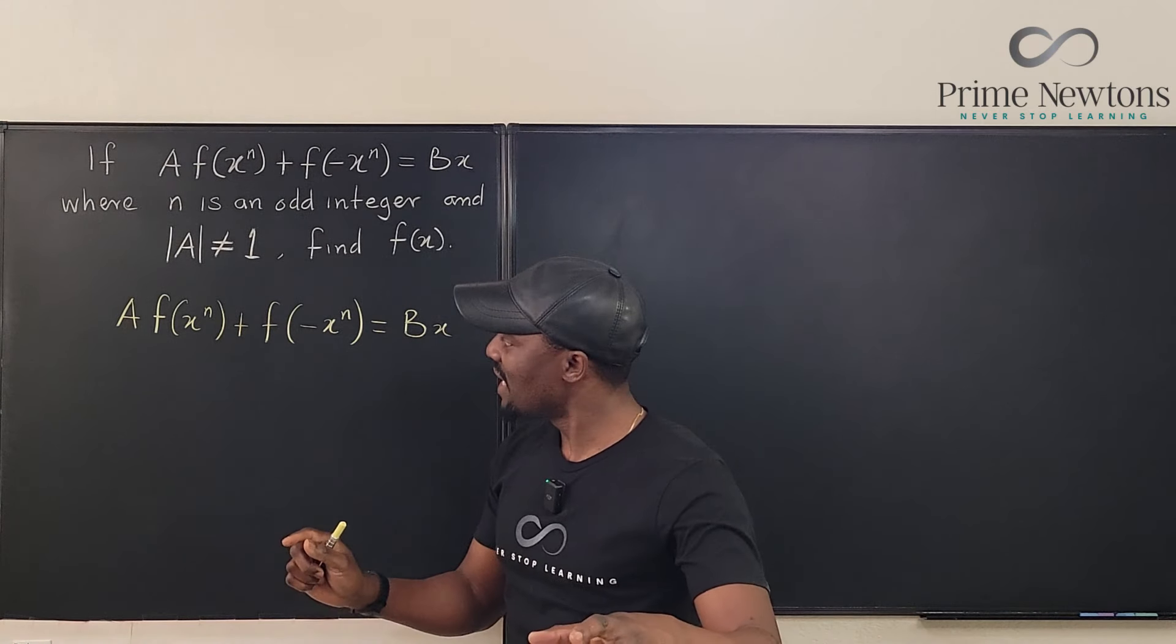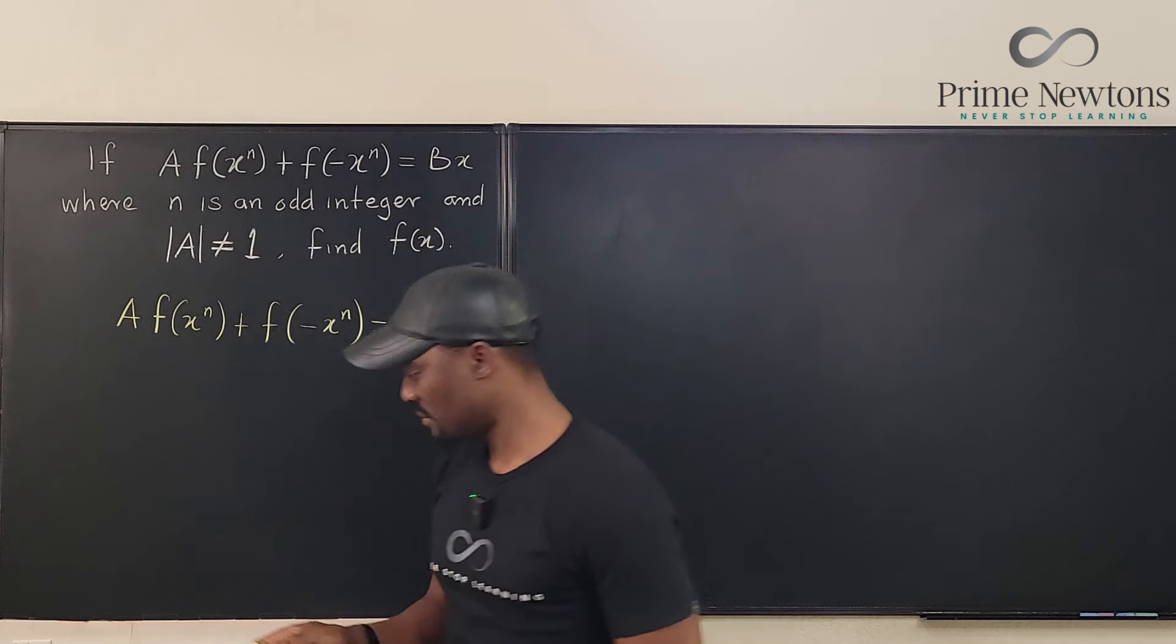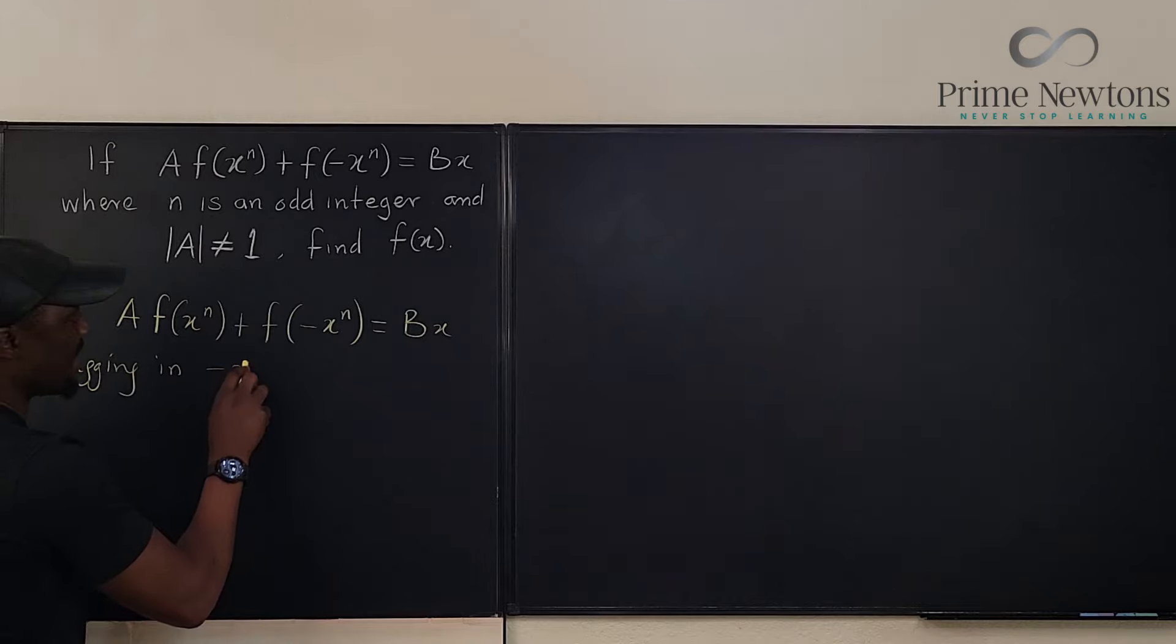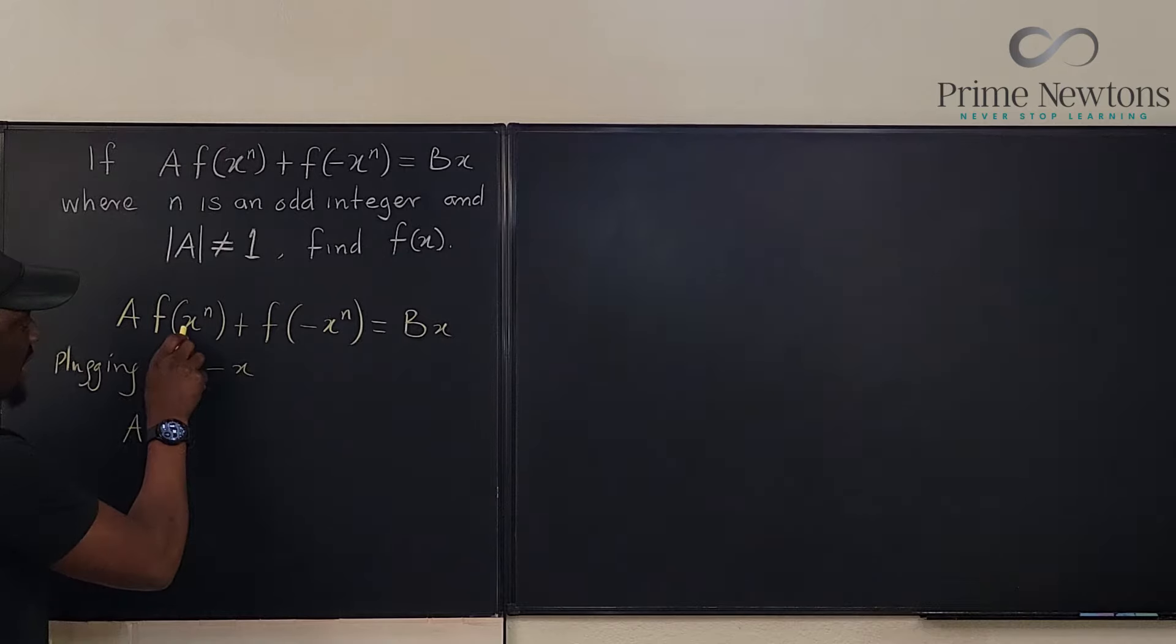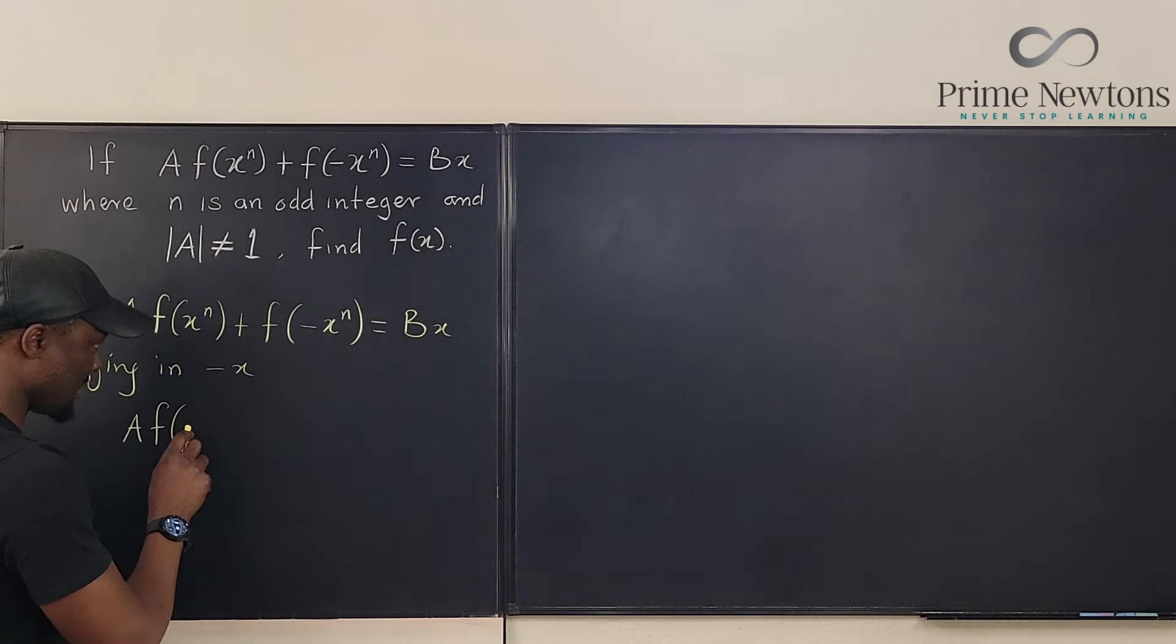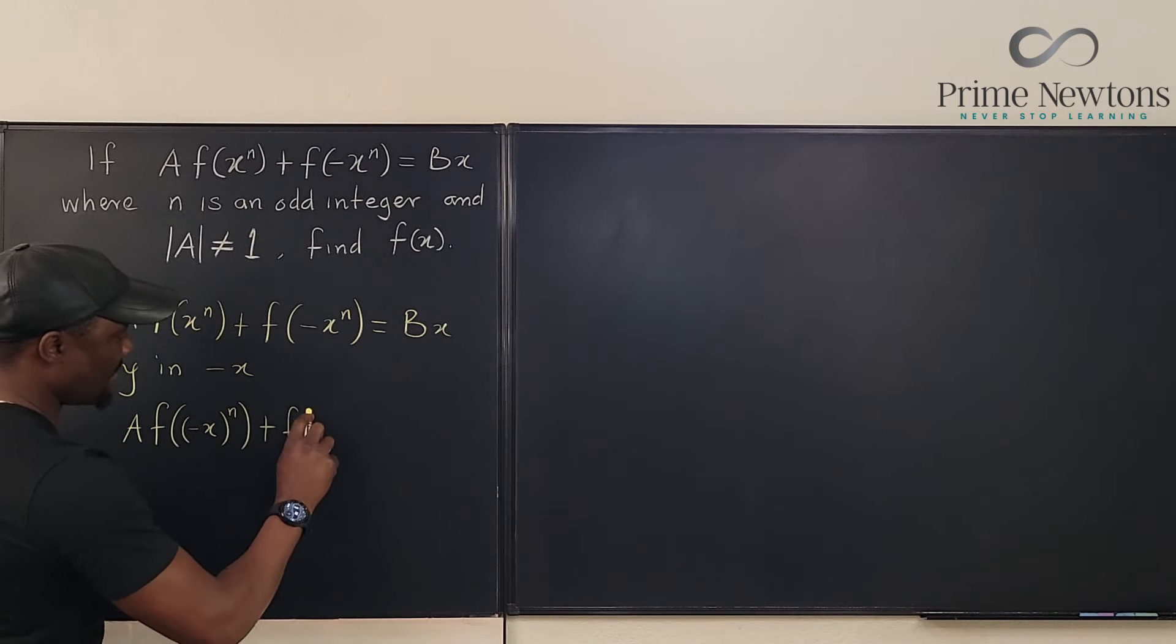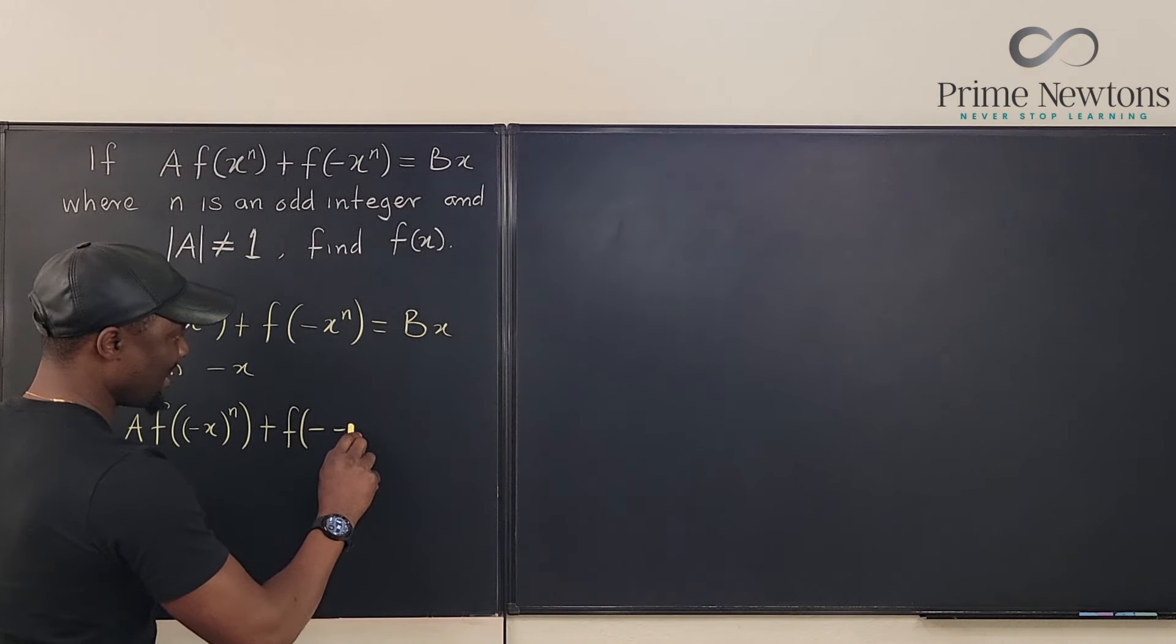But what I'm going to do next is, instead of plugging in x, I'm going to plug in negative x and see what happens. So if I plug in negative x, I'm going to have A times f(-x)^n plus f(--x)^n.